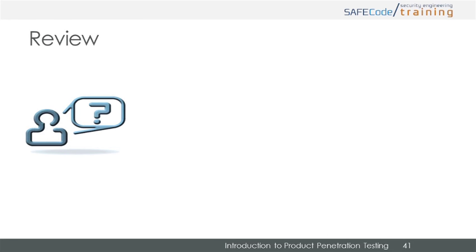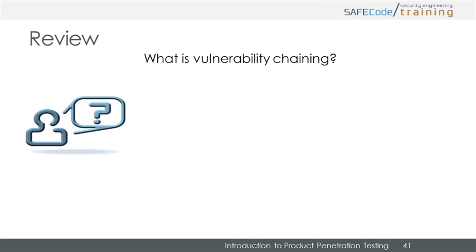Time for review. What is vulnerability chaining? Vulnerability chaining is the use of two or more bugs, functions, etc., linked together to construct a complete path to a vulnerability. This can be done by starting at an entry point and asking what paths can be taken, or starting at the vulnerability goal and seeing what paths lead there.